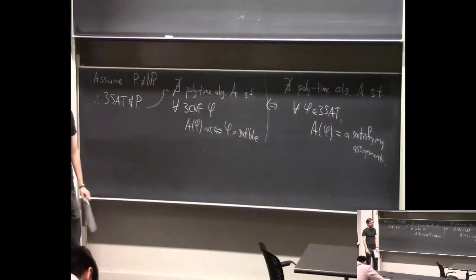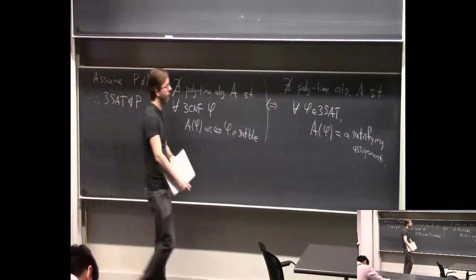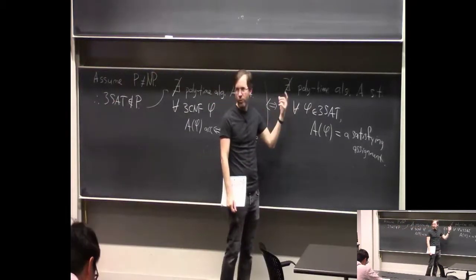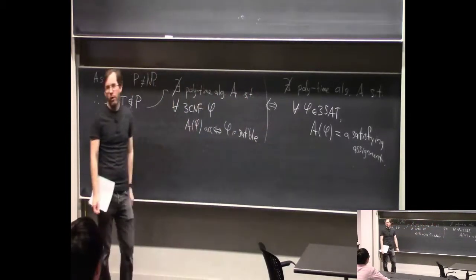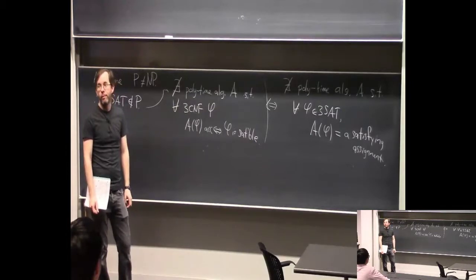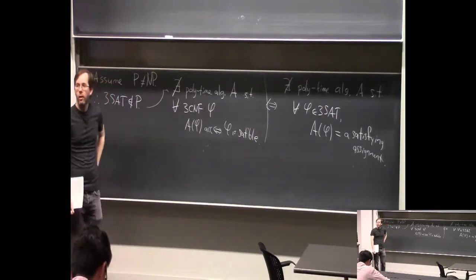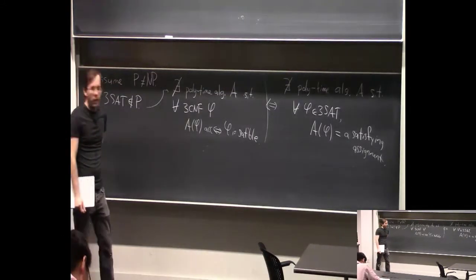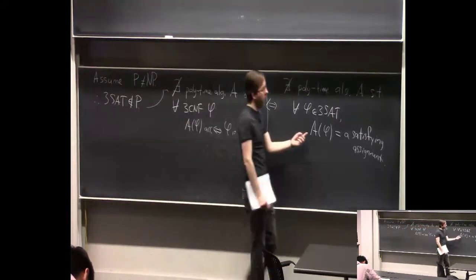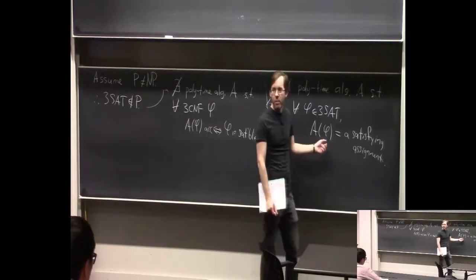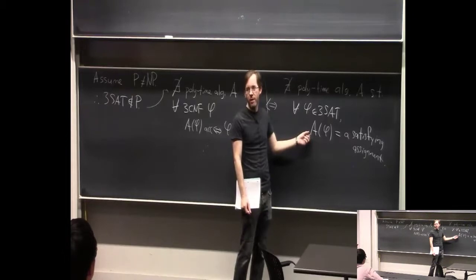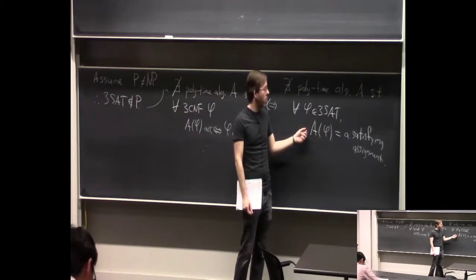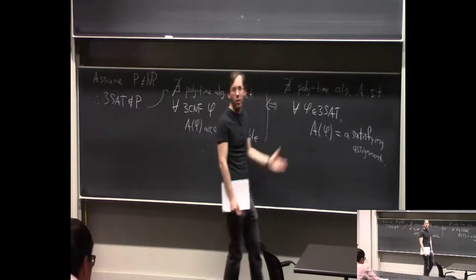Why are these two things equivalent? If I have an algorithm — suppose for a contradiction that I have an algorithm with the guarantee of outputting a satisfying assignment — you just run this algorithm. If it finds a satisfying assignment, you can check that it's really a satisfying assignment and then say it's satisfiable. There's no assumption about what A does if you give it an unsatisfiable formula — it doesn't matter, because it's not going to output a satisfying assignment anyway.